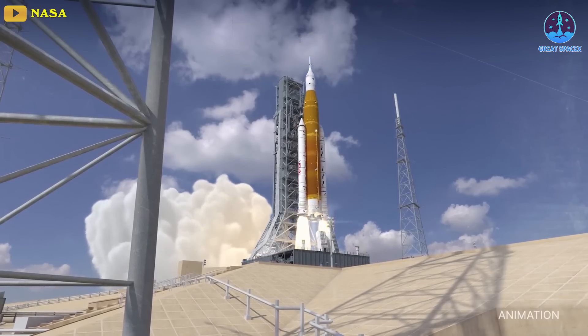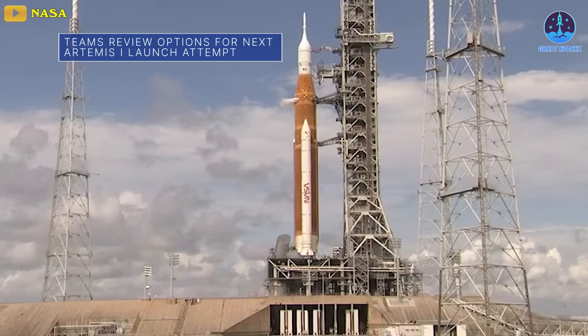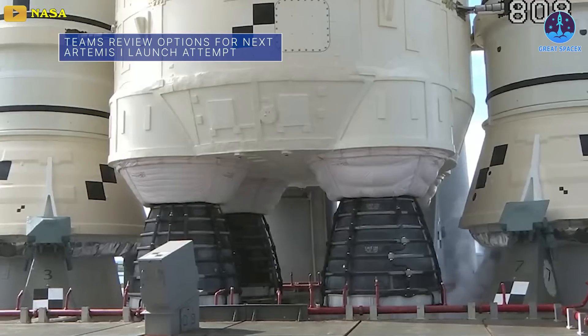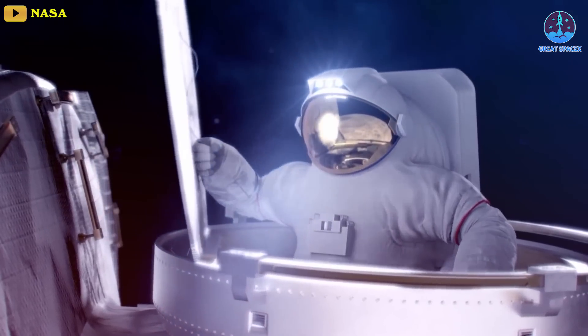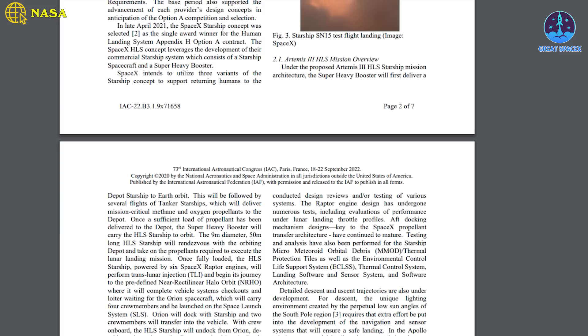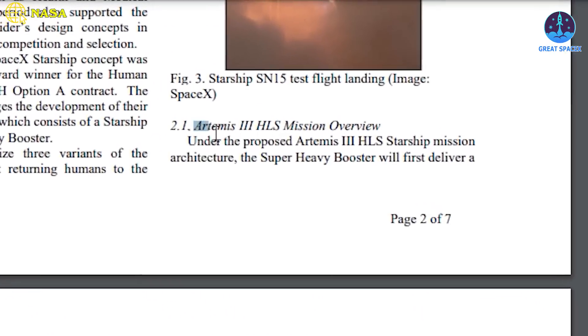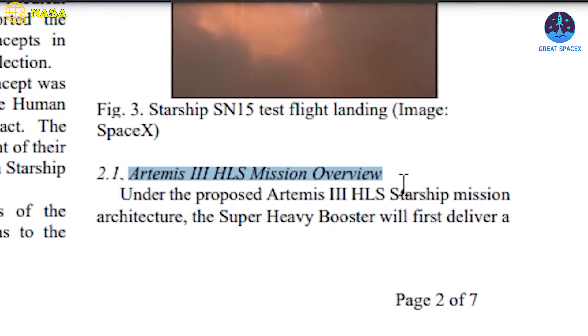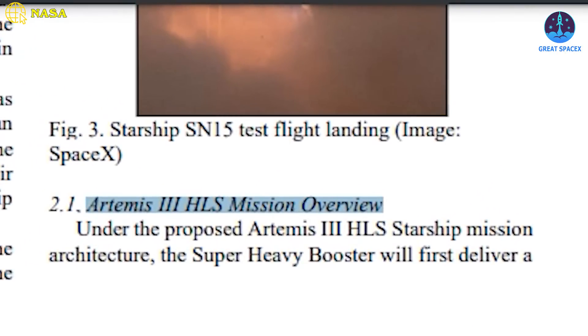While the first Artemis mission is slated to launch soon after NASA fixes fuel leak problems in its supporting architecture, the third mission will become the first to land astronauts on the lunar surface. Today's research paper, submitted by NASA officials to the IAC, shares details on the agency's plans for the Artemis III mission.